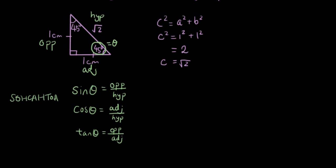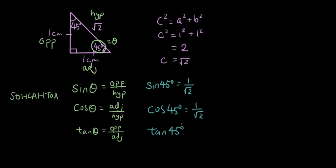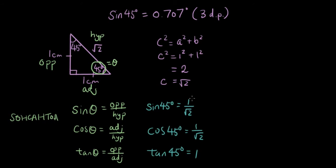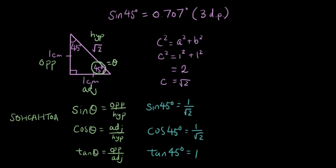So we write out the three ratios and substitute in the numbers. Sin 45 degrees equals 1 over the square root of 2, because opposite is 1 and hypotenuse is square root of 2. Cos 45 is also 1 over square root of 2. And tan 45 is equal to 1, because 1 divided by 1 is 1. If you type 1 divided by the square root of 2 into your calculator, you get 0.707, which matches — so these are the exact values.